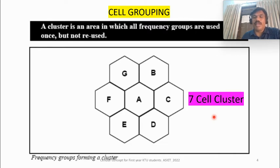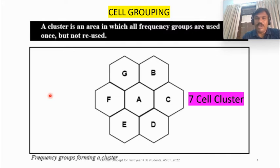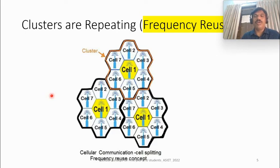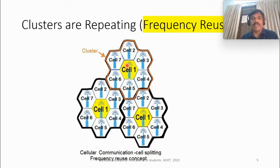If KTU asks what is a cluster, you can use this example: 70 channels equally distributed across 7 cells. I will show how to draw this in class. Now the important concept is frequency reuse. We studied that a cluster is formed from 7 cells, covering Angamali and surrounding places. But we are supposed to cover the entire state — how, using only 70 channels? That is called frequency reuse.